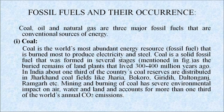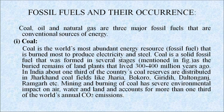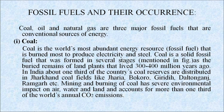Now, fossil fuels and their occurrence. Coal, oil and natural gas are three major fossil fuels that are conventional sources of energy. Coal is the world's most abundant energy resource that is burnt most to produce electricity and steel. Coal is a solid fossil fuel formed in several stages from the buried remains of land plants that lived 300 to 400 million years ago. In India, about one-third of the country's coal reserves are distributed in Jharkhand coal fields like Jariya, Bokaro, Giridi, Dhanbad, etc. Mining and burning of coal has severe environmental impact on air, water and land, and accounts for more than one-third of the world's annual carbon dioxide emission.